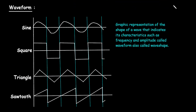In this video, we will see waveforms. Here we can see some kinds of waveforms. First of all, this is a sine wave. Then this is called a square wave. Then this is called a triangle waveform. Then next is sawtooth waveform. Now what is a waveform? A graphic representation of the shape of a wave that indicates its characteristics such as frequency and amplitude — also called waveshape.